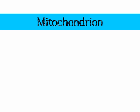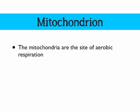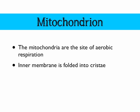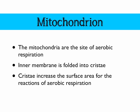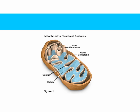Another very important organelle is the mitochondria — or mitochondrion if we're talking about a single one. The mitochondria are where aerobic respiration happens, a very important reaction. This is a double membrane-bound organelle. The inner membrane is folded into large folds called cristae, which increase the surface area for the reactions of aerobic respiration. There is also a soup-like cytoplasm within the organelle called the matrix, which contains the enzymes necessary for the intermediate stages of aerobic respiration. And here is our mitochondrion.